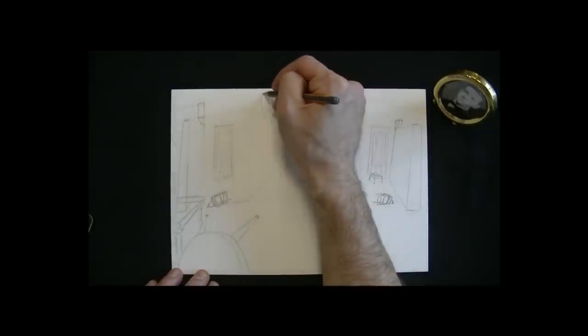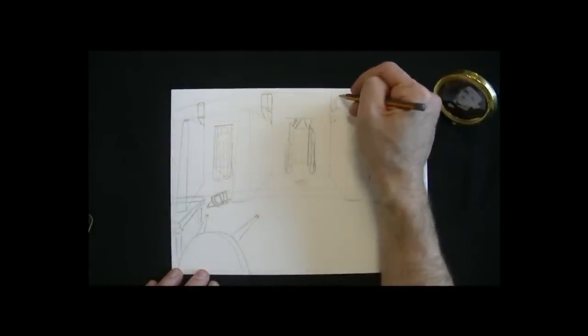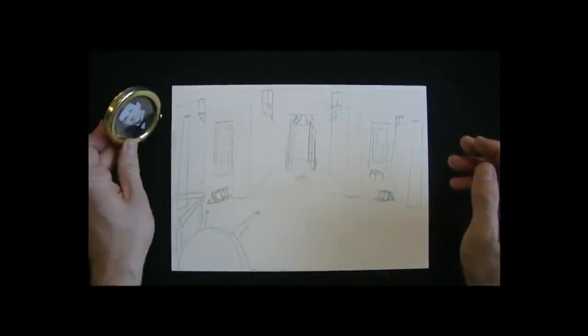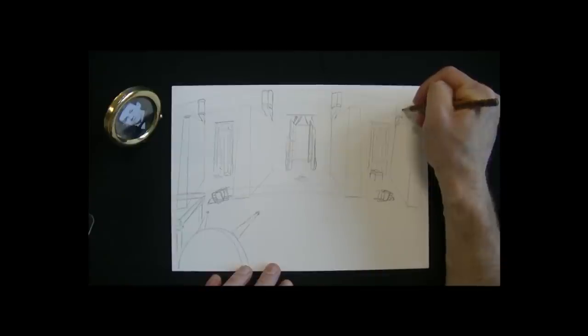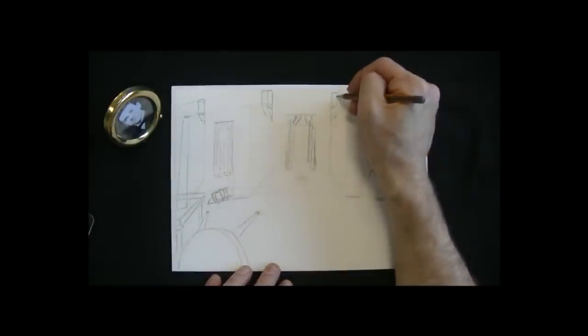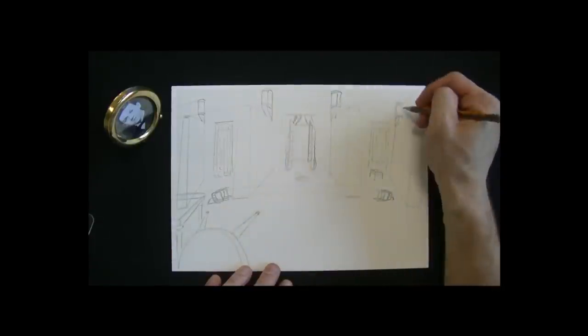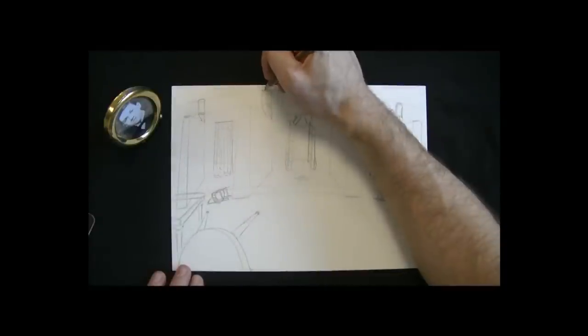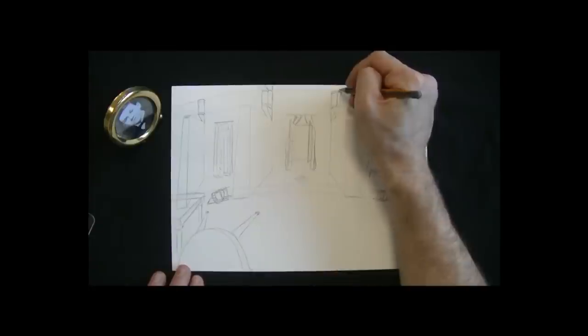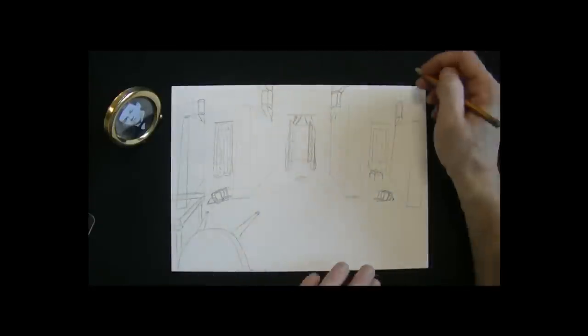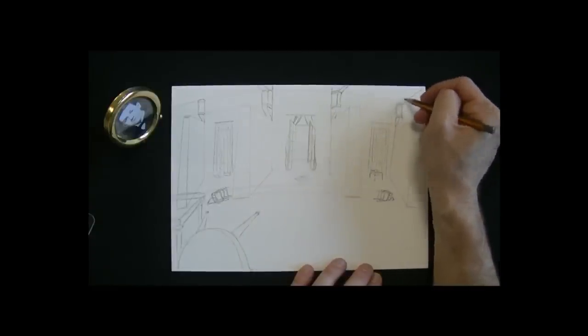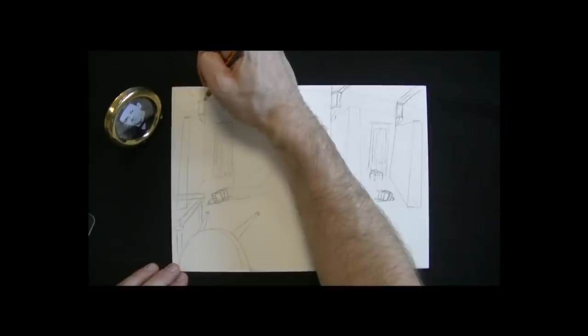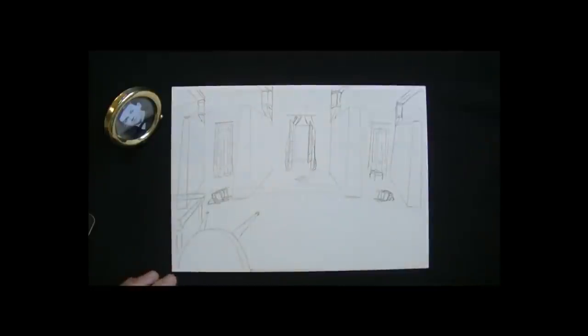Par le fait, Dunwich est scandaleusement ancien, bien plus que tous les villages situés à 50 km à la ronde. Au sud du hameau, on distingue encore les murs et la cheminée de l'antique Maison Bishop, bâtie avant 1700, tandis que les ruines du Moulin près des Chutes datant de 1806 constituent l'édifice le plus moderne du lieu. L'industrie n'a pas prospéré ici et l'essor des manufactures au XIXe siècle s'est révélé un feu de paille. Et plus vieux encore, s'élèvent sur les collines les immenses cercles de pierres grossièrement taillées qu'on attribue en général aux Indiens plutôt qu'aux colons.